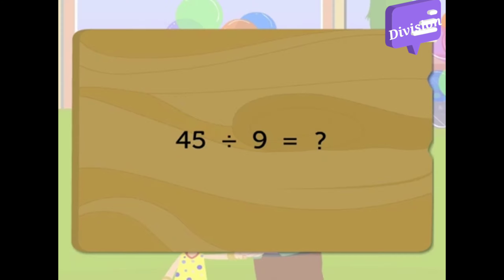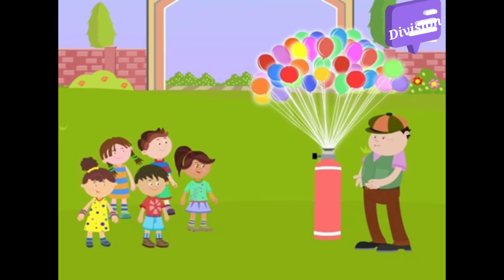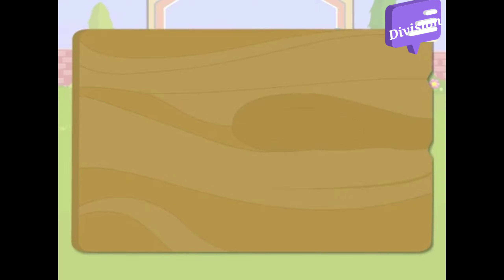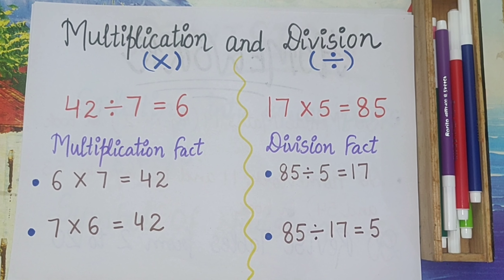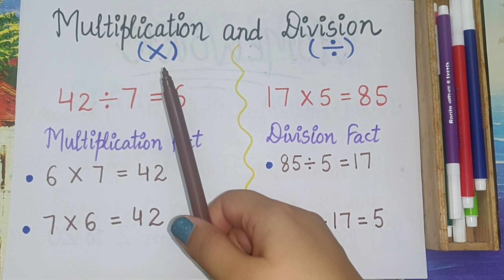Now if there are five kids and 45 balloons in all, how many balloons does each kid get? Here we divide 45 by 5 to find the quotient. 45 divided by 5 equals 9. Look here, we got both multiplication and division facts from the same example. Now as you have learned, there is a relation between multiplication and division, right? They both are friends and they both are closely related.